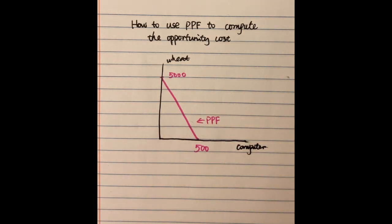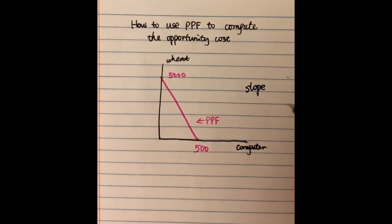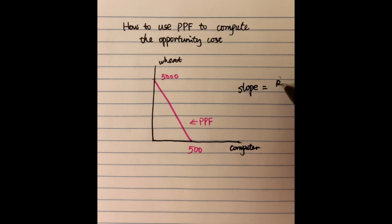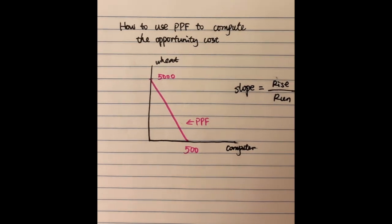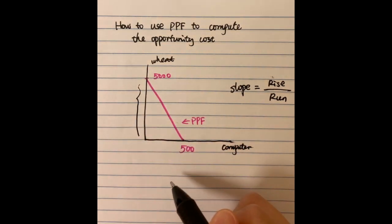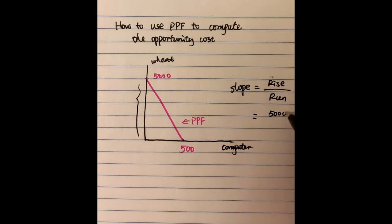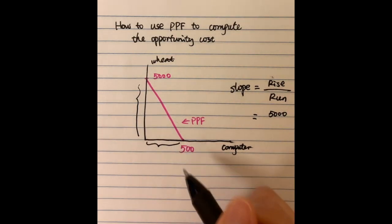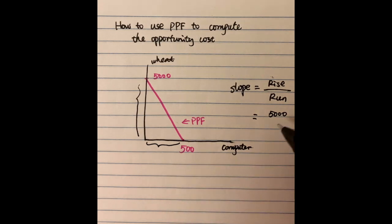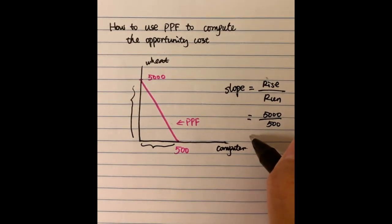Once we have the PPF, you can notice it is a straight line, so we can compute its slope. The slope equals rise over run. The rise here equals 5,000 and the run equals 500, so the slope equals 10.